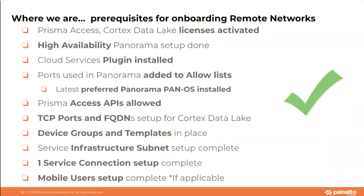So where are we in the onboarding journey? At this point, the following should be completed: Prisma Access Cortex Data Lake licenses should be activated; HA Panorama setup should be done; your Cloud Services Plugin should be installed; ports used in Panorama should be added to the AllowList, including your latest preferred Panorama PanOS installed; your Prisma Access API should be allowed; TCP ports and FQDN setups for Cortex Data Lake; device groups and templates should be in place; and service infrastructure subnet setup should be completed.